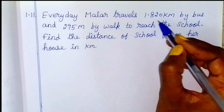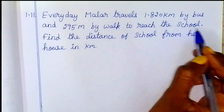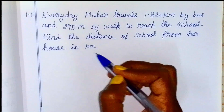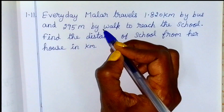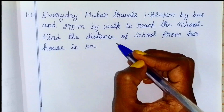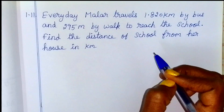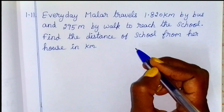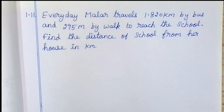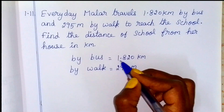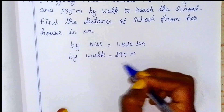Every day Muller travels 1.820 kilometers by bus and 295 meters by walk to reach the school. Find the distance of school from her house in kilometers. When the bus distance is in kilometers, the walk distance is in meters. So the total distance covered from house to school. We need to add the distance by bus and by walk. Since walk is in meters, we have to convert it.